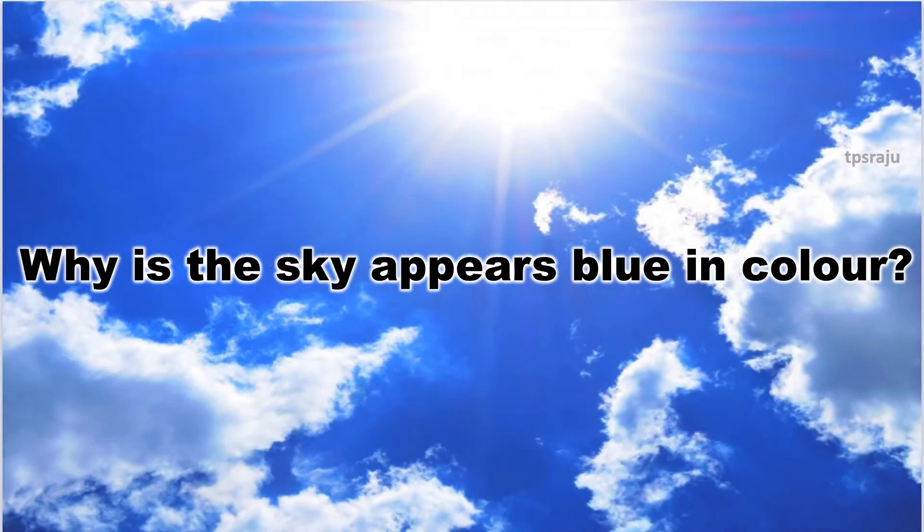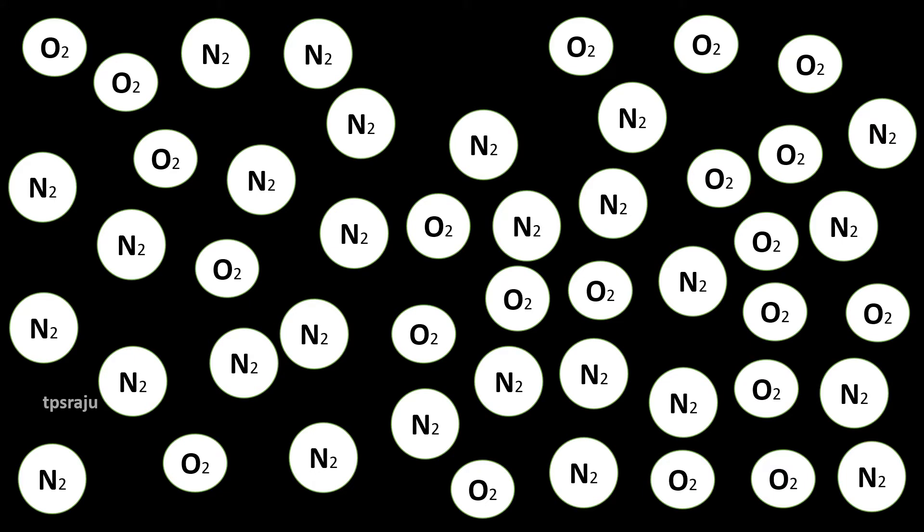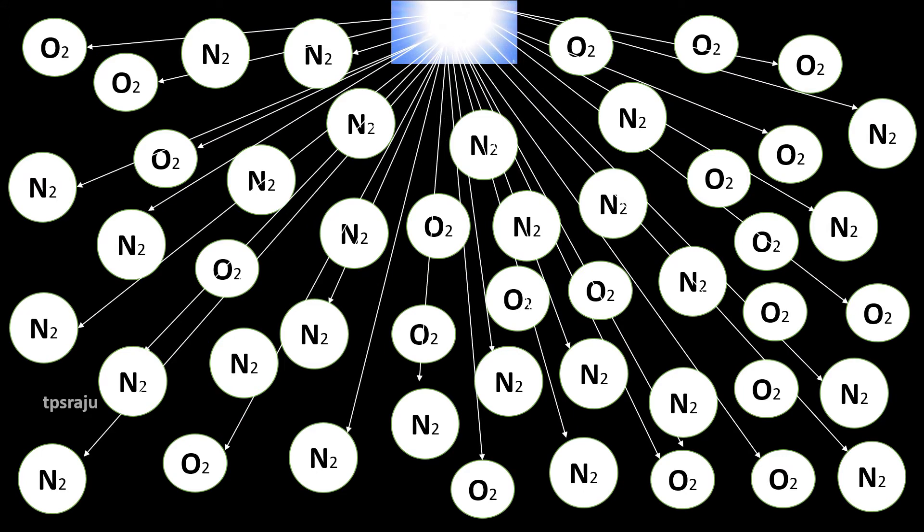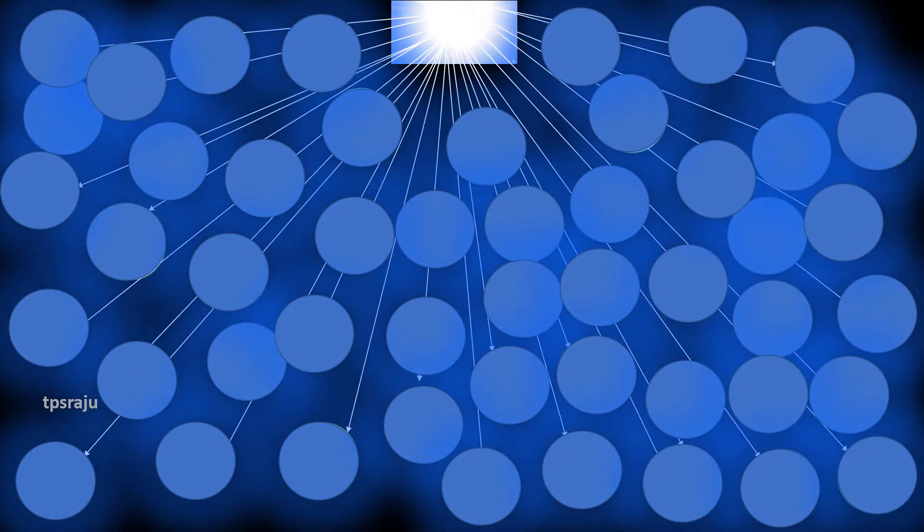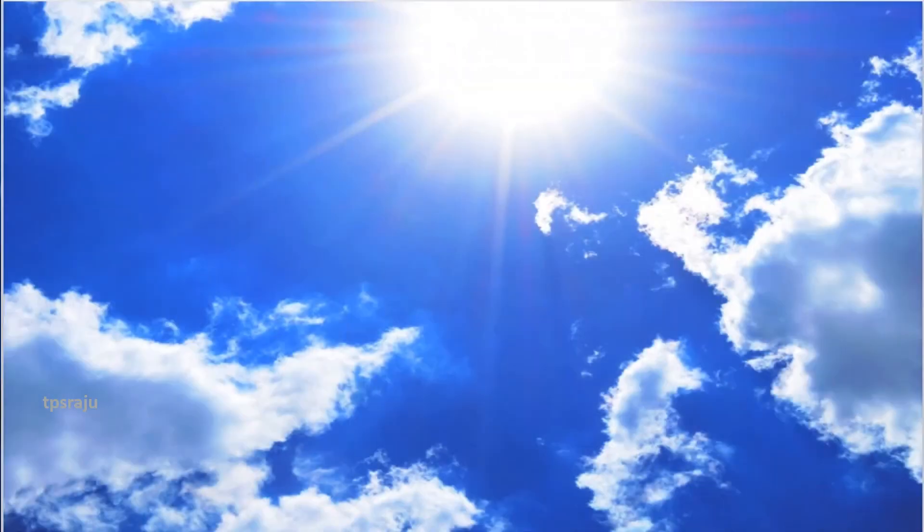Now let us know about why sky appears blue in color. Our atmosphere contains nitrogen and oxygen molecules. When sun rays strike these molecules, they absorb light energy and scatter the blue light. So sky appears blue in color.